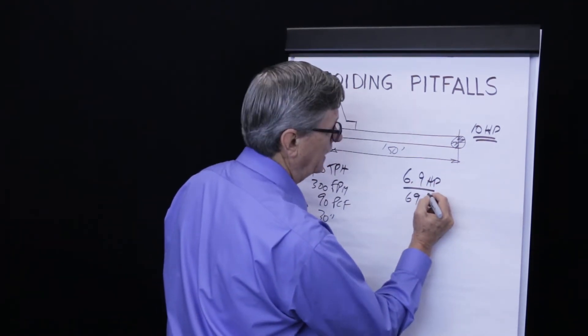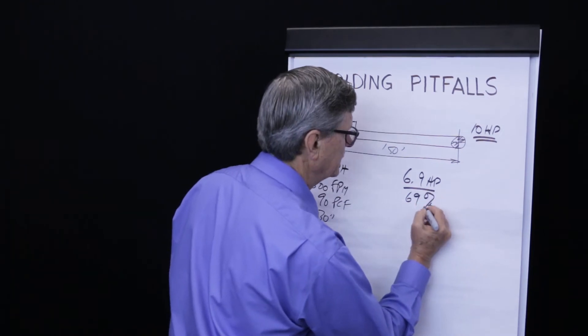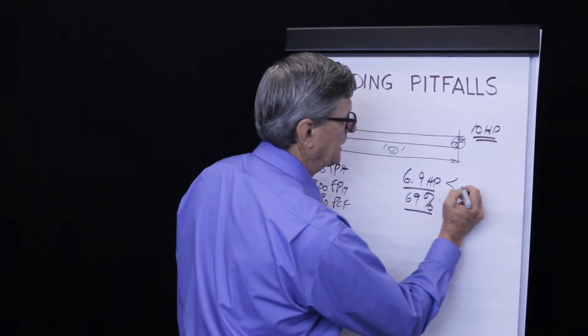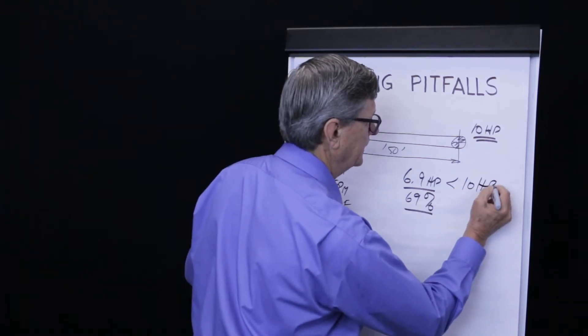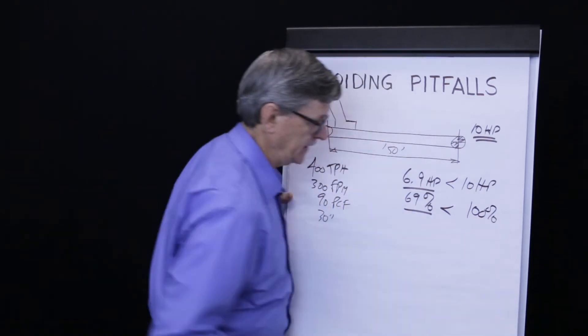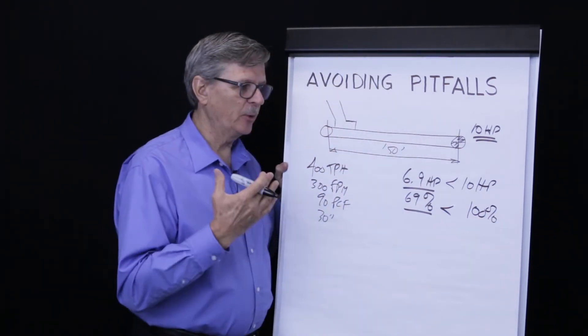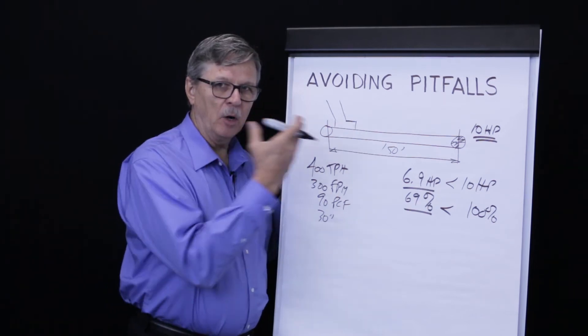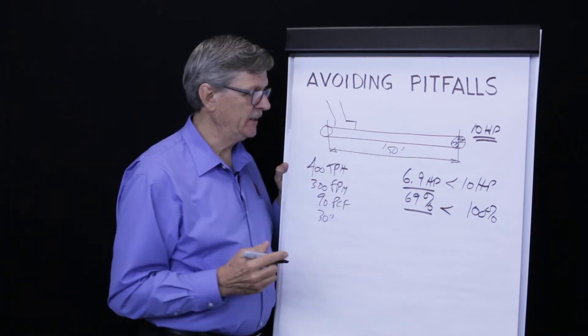The actual design cross section would be 69% of the CEMA recommendation. 6.9 horsepower is less than 10 horsepower and 69% is less than 100%. Let's say production is under pressure to handle more tons per hour on this existing conveyor. What do we do?